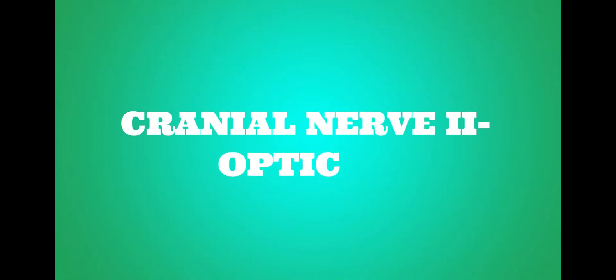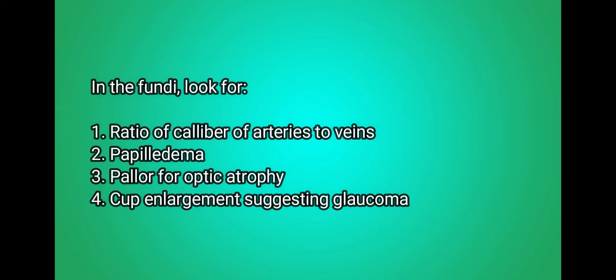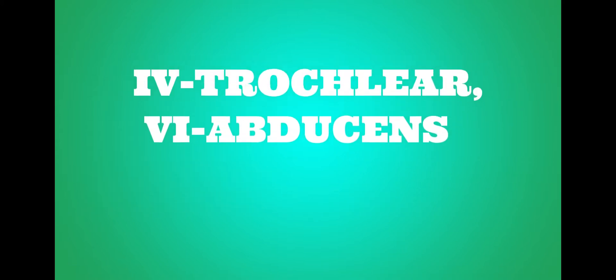Cranial nerve 2, the optic nerve, mediates vision. To assess its function, check the patient's visual acuity and visual fields, removing glasses if necessary. Inspect the optic fundi of both eyes. In the fundi, be sure to look for the ratio of calibre of arteries to veins, look for papilledema, pallor from optic atrophy, and any cup enlargement suggesting glaucoma.